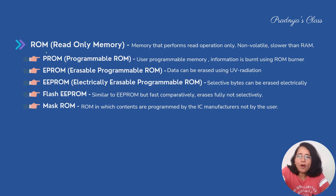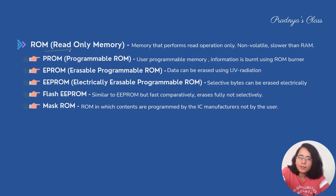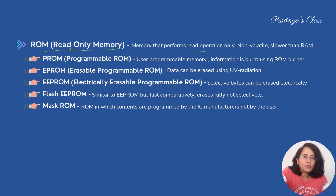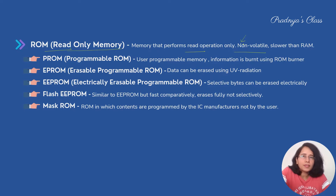Now let's study ROM, the other type of primary memory. The full form of ROM is Read-Only Memory — we can only perform read operations; we cannot write data into the ROM. It is non-volatile, meaning the contents are permanently stored even when the power goes off. However, it is slower than RAM.